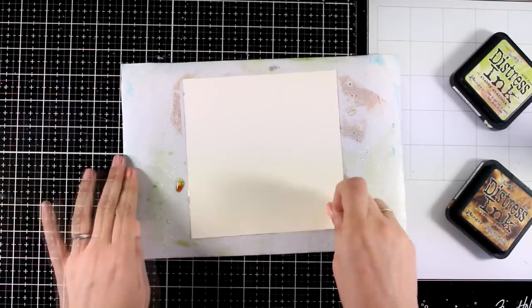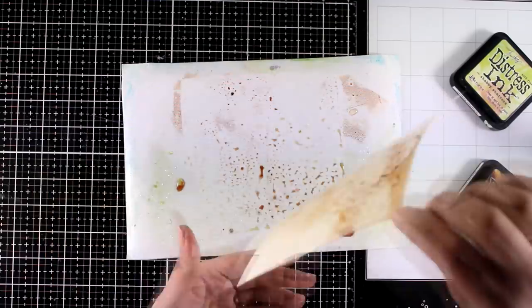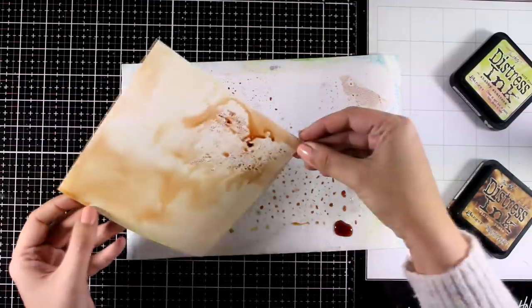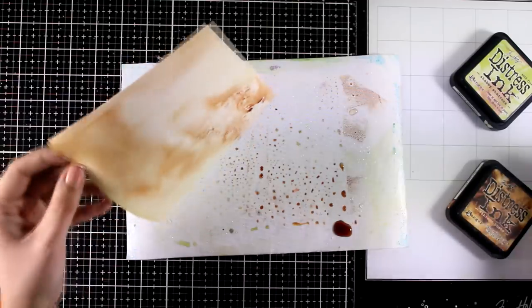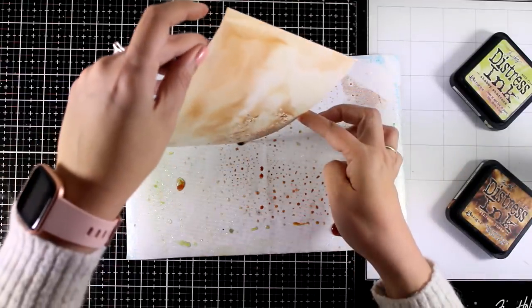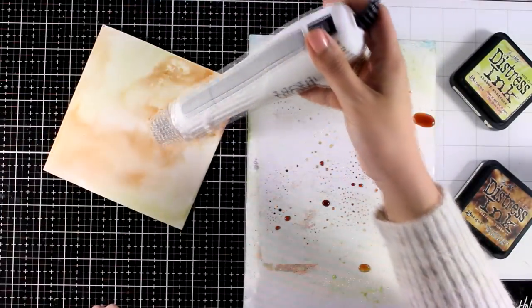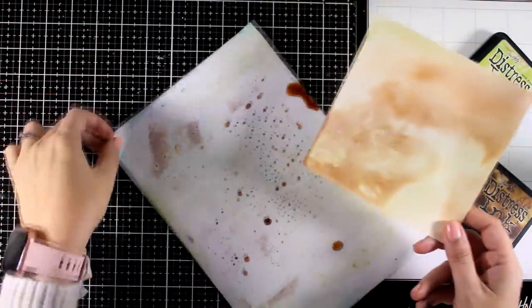By the way, the paper that I'm working with is mixed media paper by Ranger. So this is the first layer. I'm going to use my heat gun to make sure that this layer is completely dry, and then I'm going to repeat the process with the leftover ink that I have on my mat.